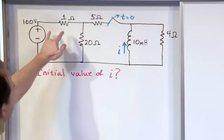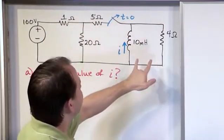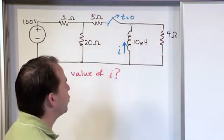We have a 100 volt source, a 1 ohm resistor, 20 ohm, 5 ohm, and on the other side of the circuit we have a 10 millihenry inductor in parallel with a 4 ohm resistor.